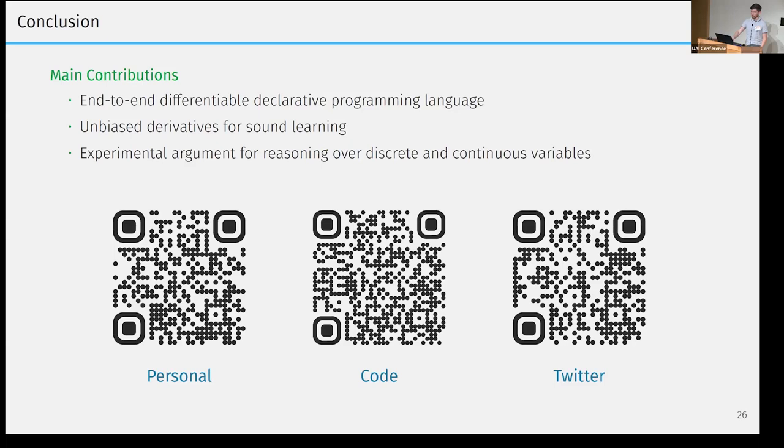To conclude, I will just repeat our main contributions. We proposed and developed DeepSea ProbLog, a novel end-to-end differentiable programming language that supports discrete and continuous random variables and neural networks. We proved that our way of performing learning can be made unbiased to get to a sound learning framework. And we gave an experimental argument as to why continuous random variables are actually interesting and might lead us to solve new problems. And for more information and details about the paper, our experiments and the code, please go to one of the following links. Thank you.